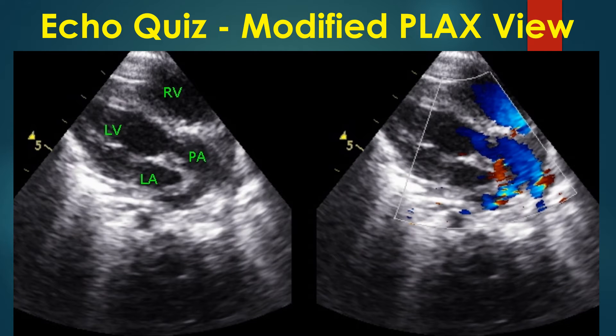Findings are easy to appreciate as it is an annotated image. The Parasternal Long Axis View is often the first view taken during echocardiography. Usually it visualizes the left ventricle, left atrium, right ventricular outflow region, and aorta. Here we have a modified parasternal view to trace the great vessel arising from the left ventricle distally.